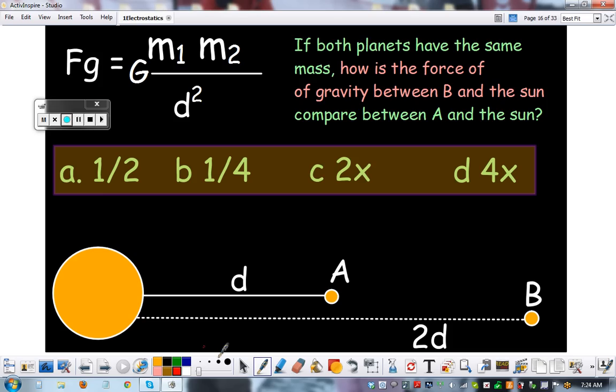Here's your answer. The answer is it's one-fourth because of what's called the inverse squared law. Mass is constant, G is constant. The only thing that's changing is distance. If distance is squared and it's twice the distance, two squared equals one-fourth. Pretty easy.